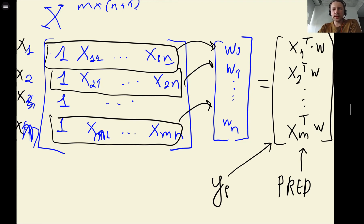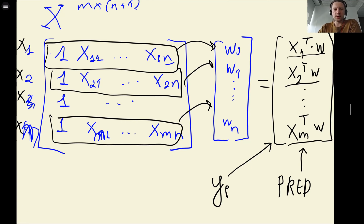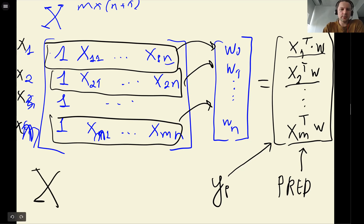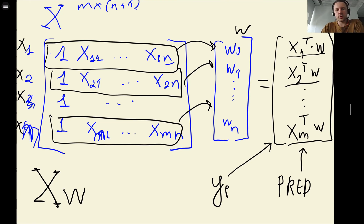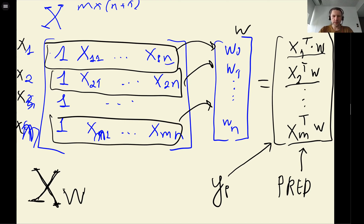You can probably recognize by now that this looks very similar to matrix-vector multiplication — in fact, it is matrix-vector multiplication. To apply linear regression, we take matrix X, take weight vector w, and just multiply them. This is our model: perform matrix-vector multiplication.